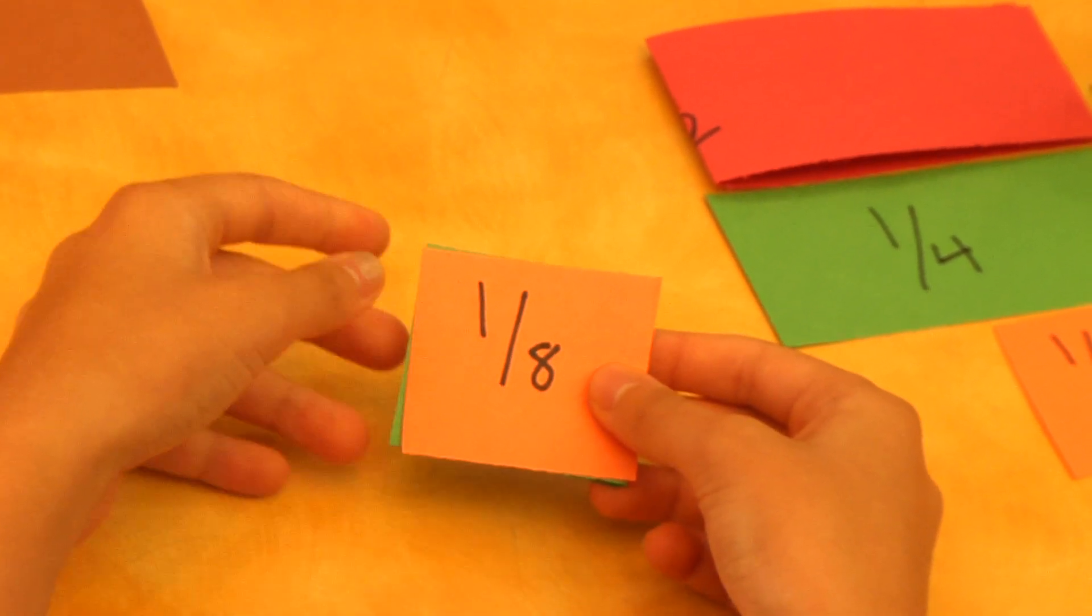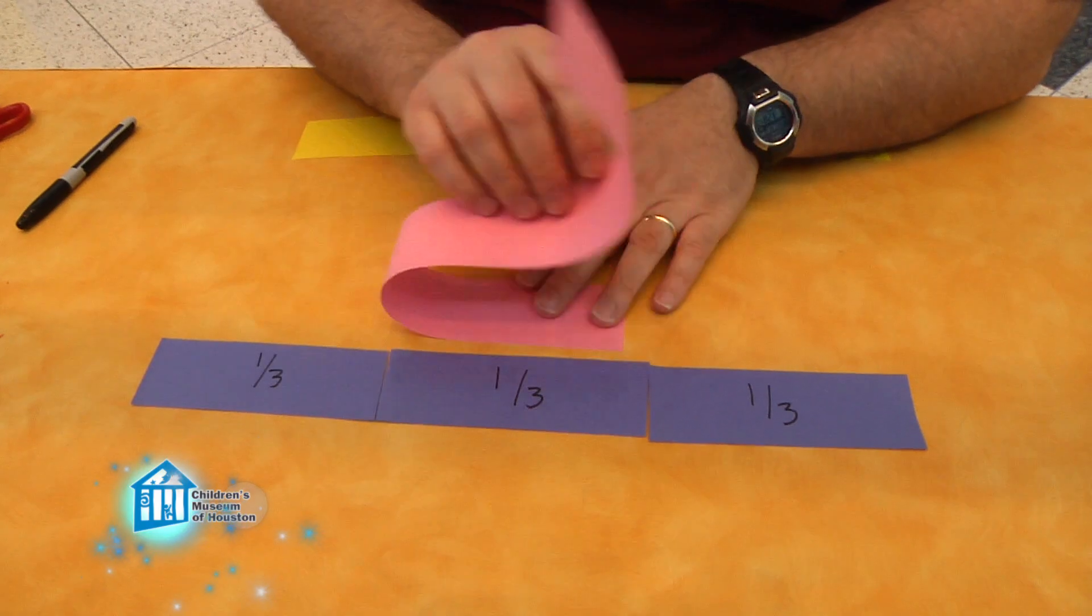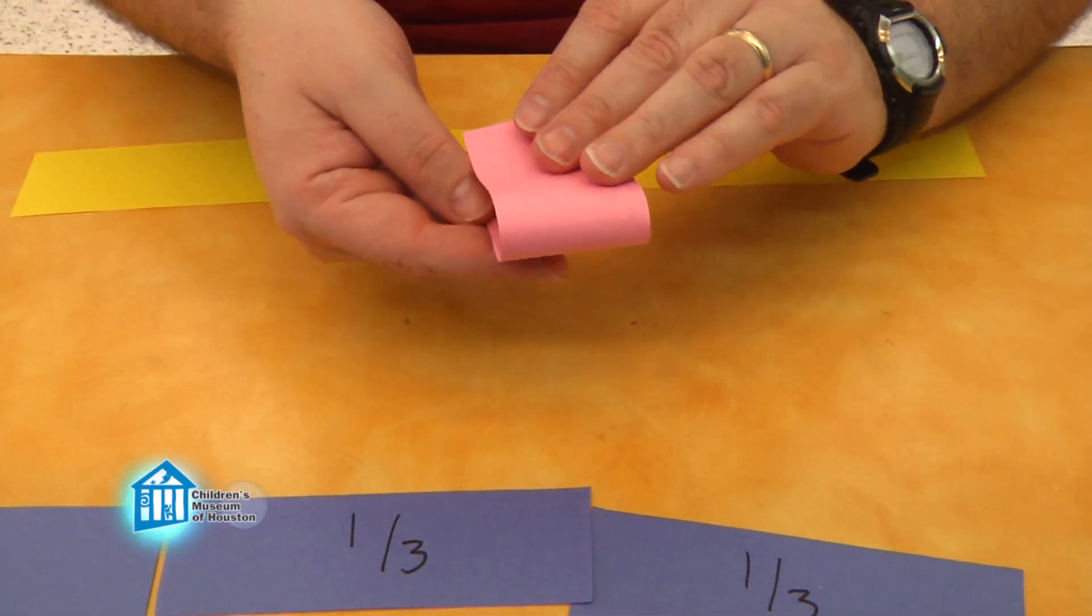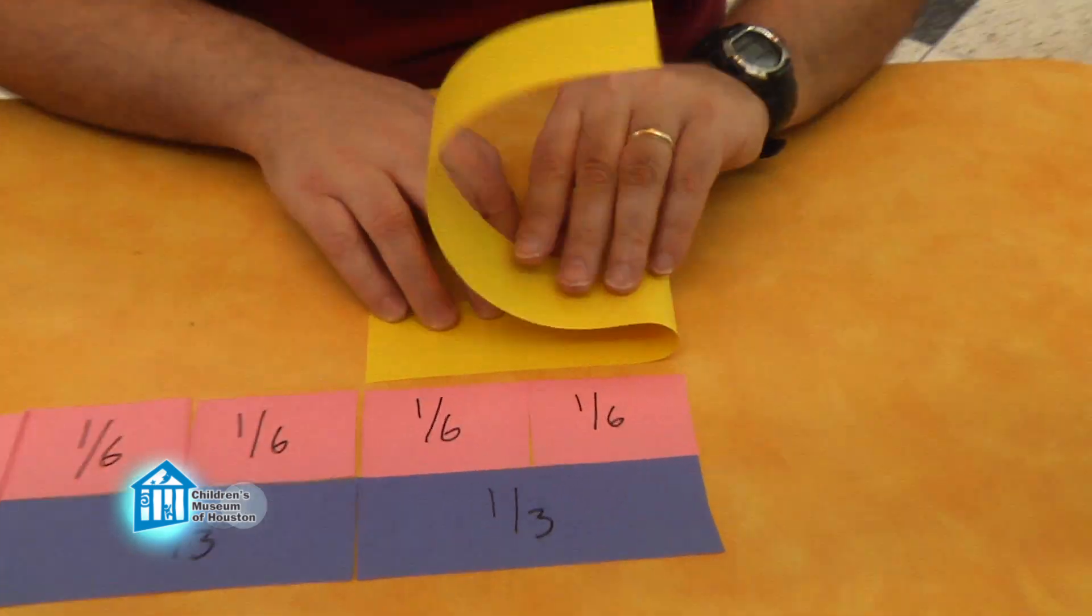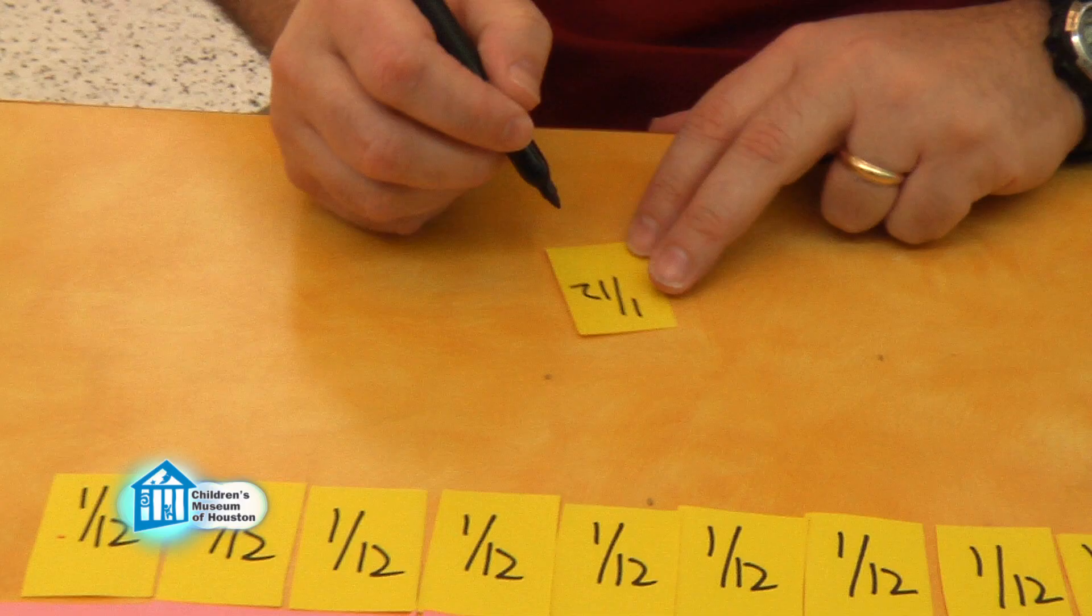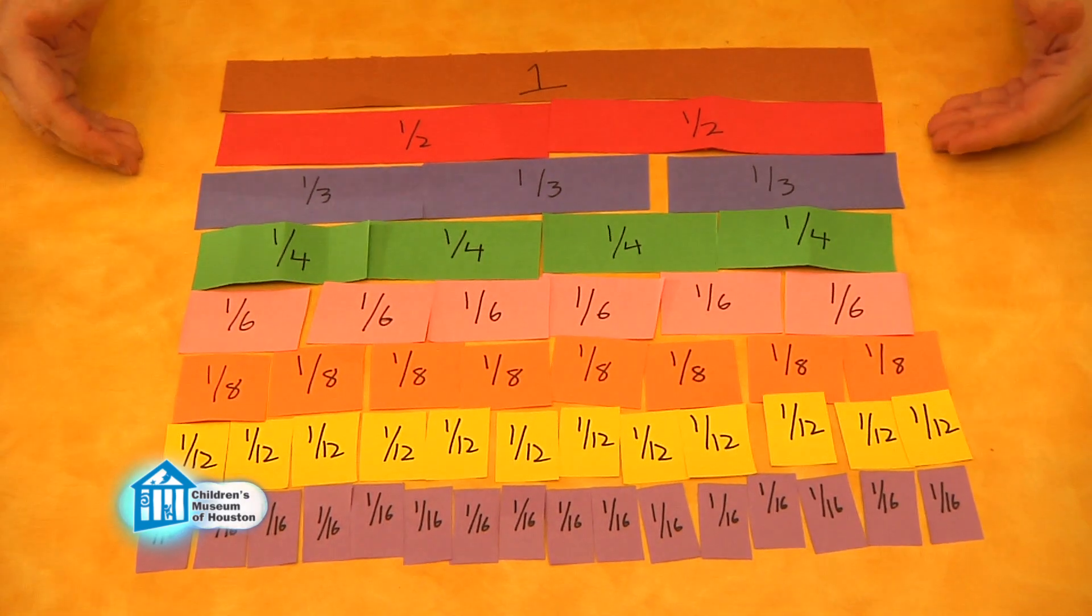Let's add in three more fractions. First fold a strip into three equal pieces and cut it to get thirds. Fold a second strip into thirds, then in half. That will give you six pieces for sixths. And finally fold another strip first into thirds, then in half, then in half again for twelfths. Now add those three rows to your other fraction rows.